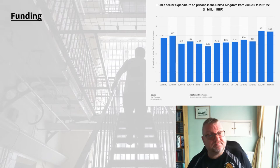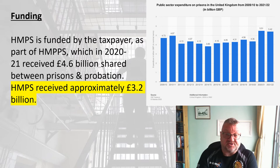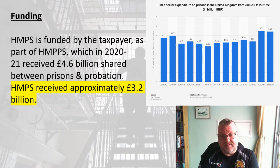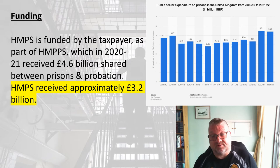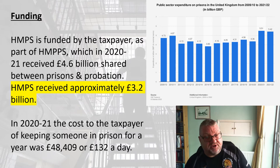His Majesty's Prison Service is funded by the taxpayer as part of HMPPS. In 2020 to 2021, it received 4.6 billion overall, shared between prisons and probation. The prison service received approximately 3.2 billion, although overall spending on prisons was nearer 5.5 billion when you include building new prisons and capital bills.